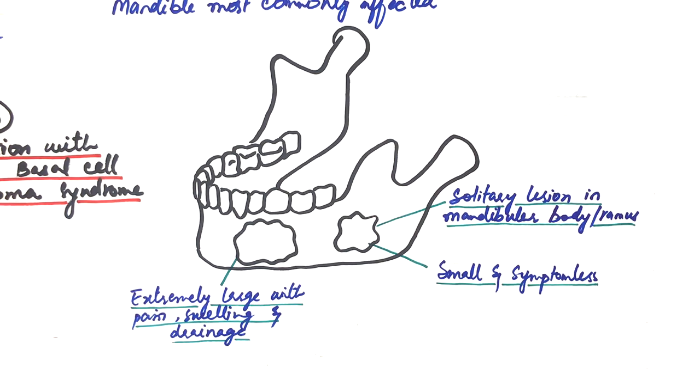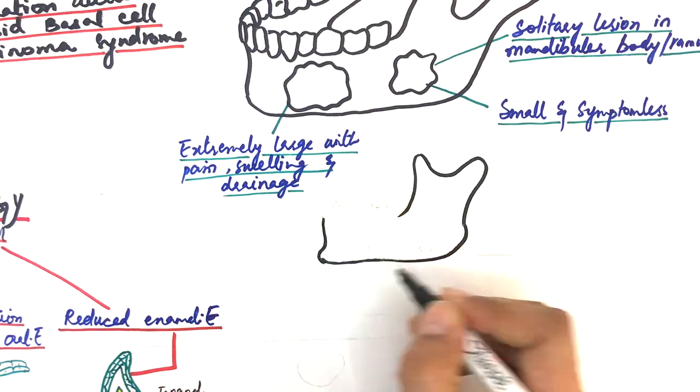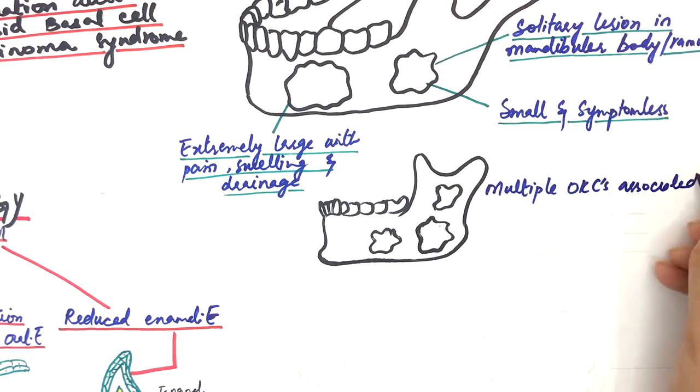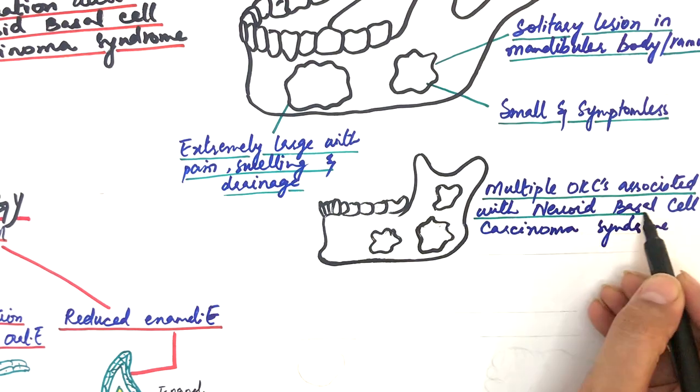In some cases, multiple cysts may also exist, either as a separate entity or in association with nevoid basal cell carcinoma syndrome.